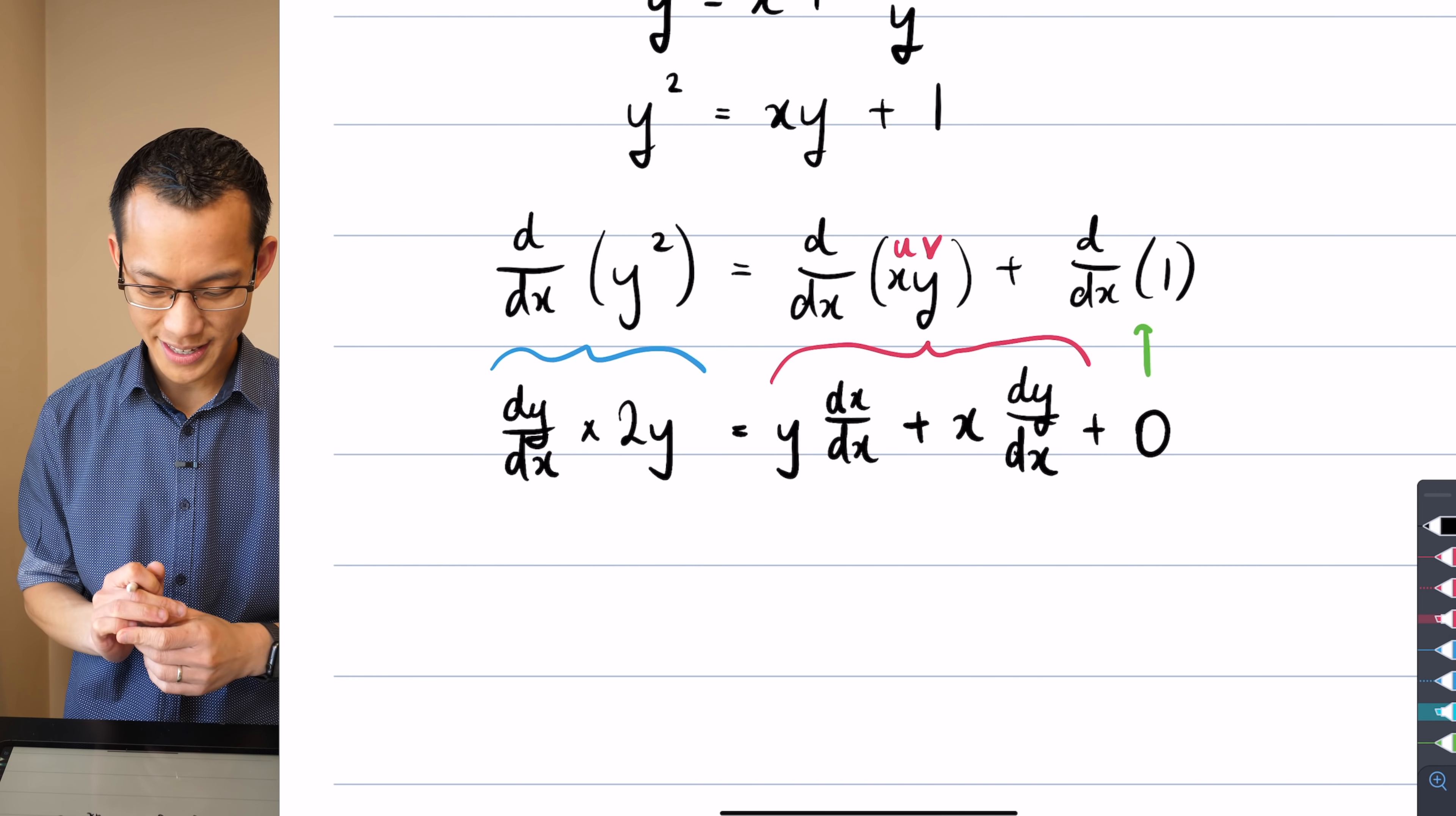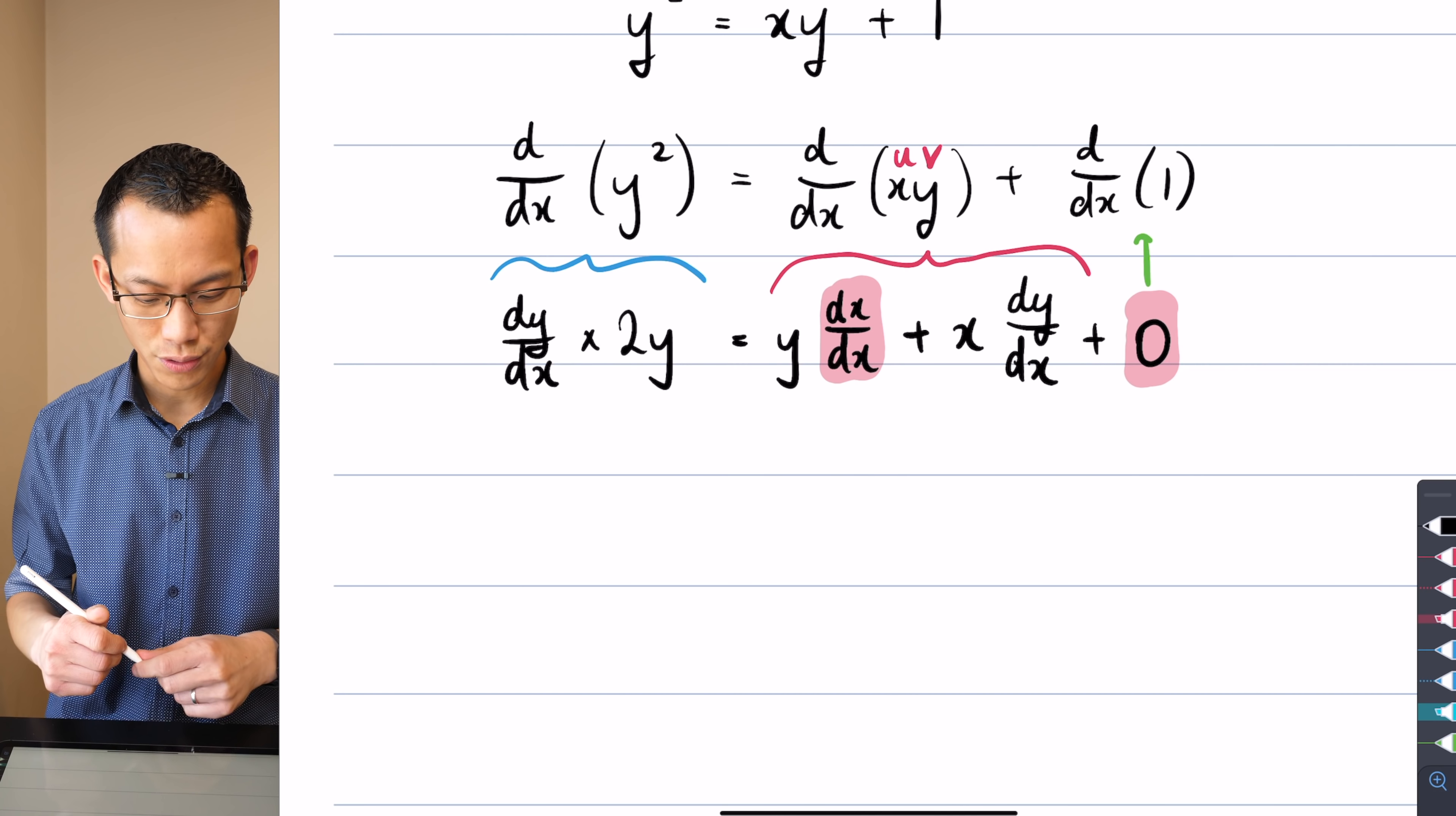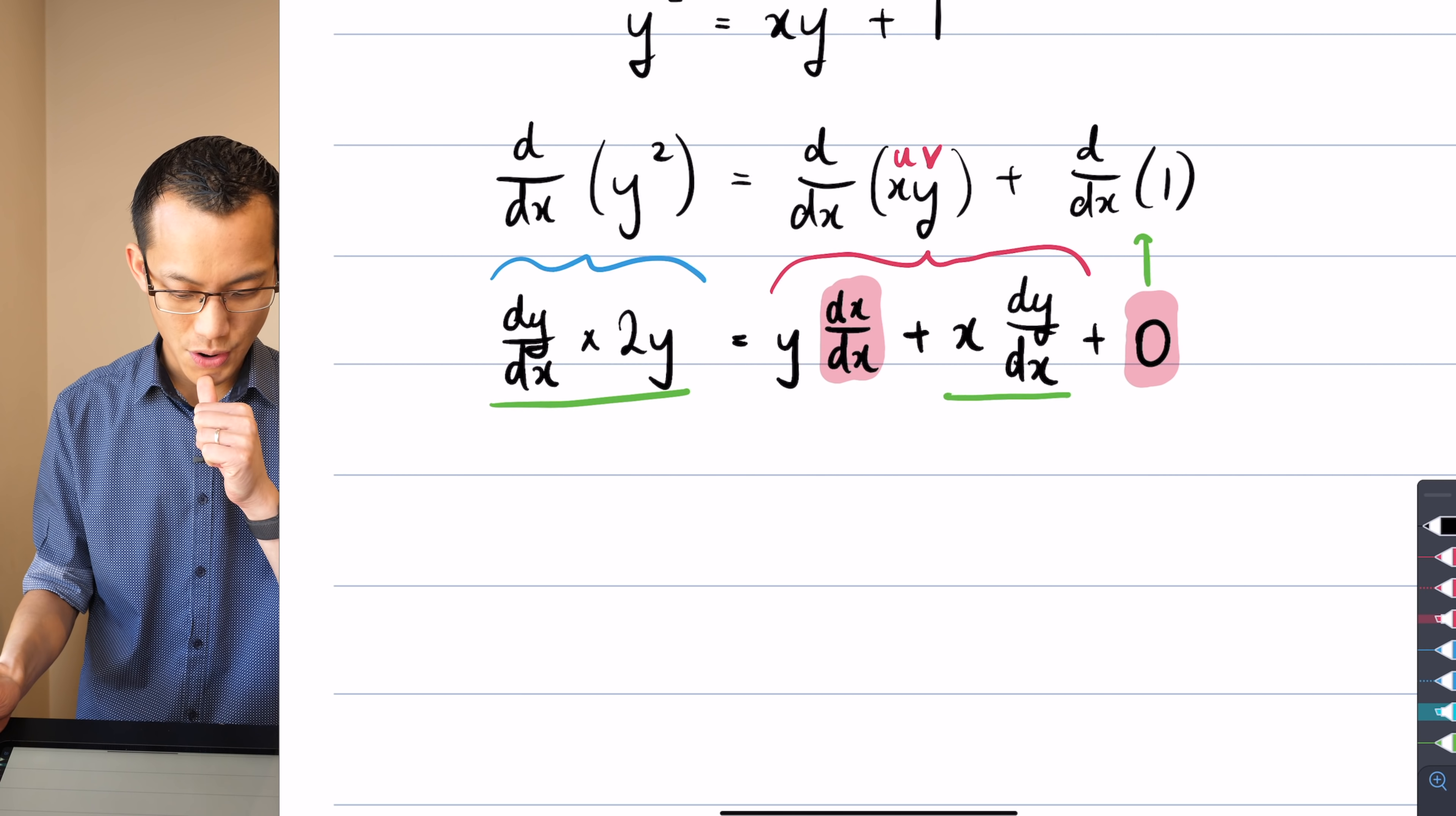All of that came from there. Now you can see if what I want is dy/dx, I just have to do a bit of tidying up and make dy/dx the subject. So let's see here. I can see for starters that this dx/dx term here is just 1. So I don't need to worry about it. This 0 is going to disappear shortly.